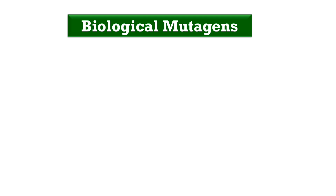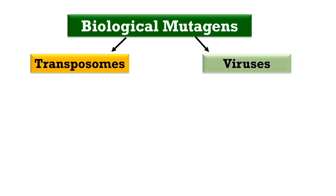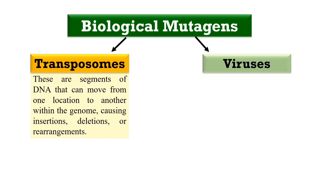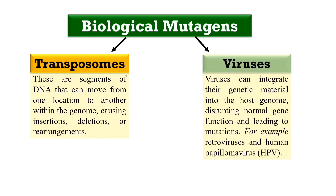The next category is biological mutagens. They include some biological entities which are the cause of mutations — specifically transposons (transposable elements) and viruses. Transposons are elements that can shift their position within the DNA; as they shift positions, they may cause errors in the reading frame, leading to mutations. Viruses integrate their genome into the genetic material of the host, and this integration also causes mutations. Examples of viruses include retroviruses and human papillomavirus.